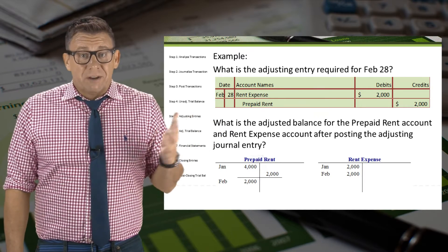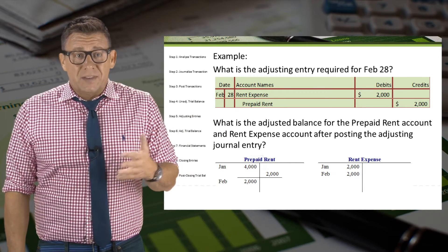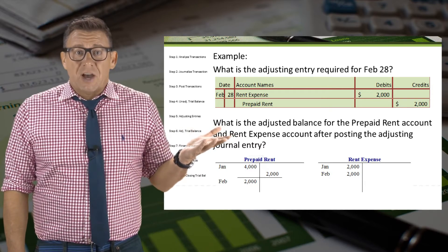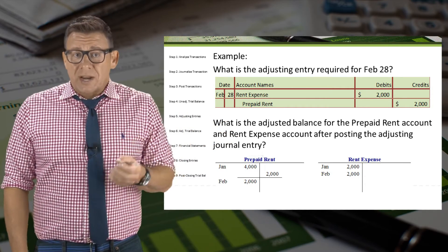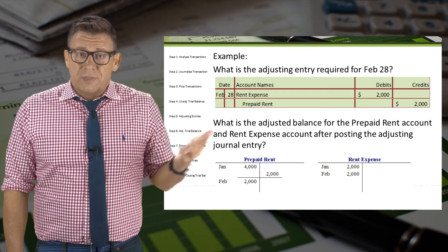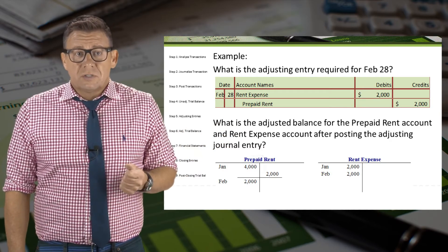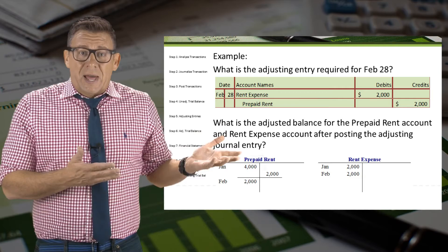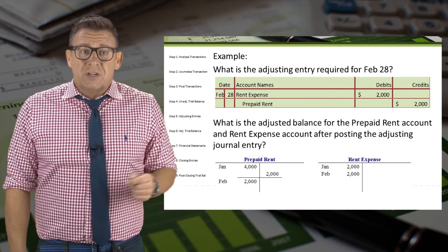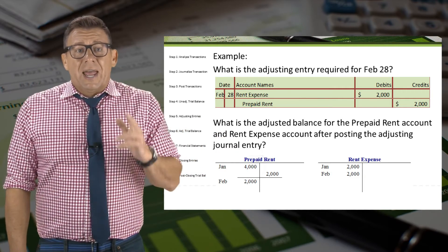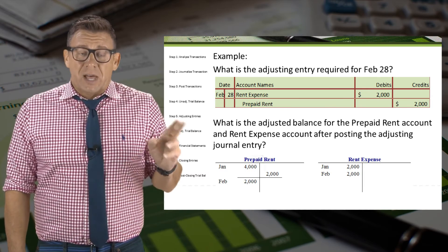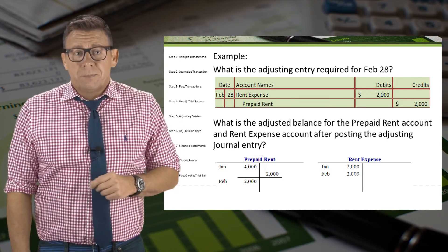The adjusting entry on February 28 isn't any different. It's a debit to the expense account rent expense and a credit to the asset account prepaid rent for $2,000. Prepaid rent has an adjusted balance of $2,000, and the expense account rent expense has a balance of $2,000 for February.